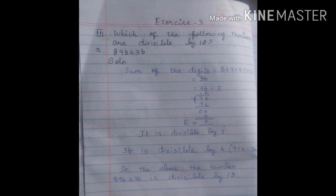36 divided by 3. 1 times 3 is 3, 2 times 3 is 6. 6 subtract 6, so remainder is 0. So it is divisible by 3.